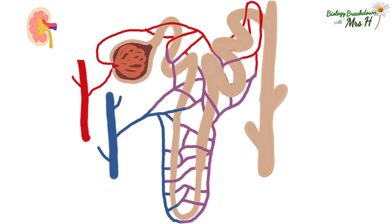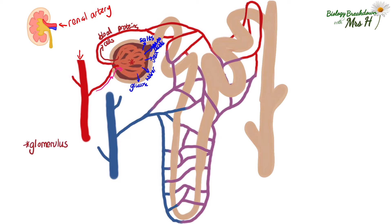Let's have a look at a nephron more closely. Blood enters the kidney via the renal artery, which branches into smaller and smaller arteries, eventually leading into a nephron. Blood flows into a ball of capillaries which, as all capillaries are, are one cell thick, so substances can pass between the gaps of the capillary walls. Small substances such as water, urea, glucose, salts, and amino acids are pushed out under high pressure. Bigger substances such as blood cells and proteins remain in the capillaries that wrap around the rest of the nephron. This ball of capillaries is called the glomerulus.